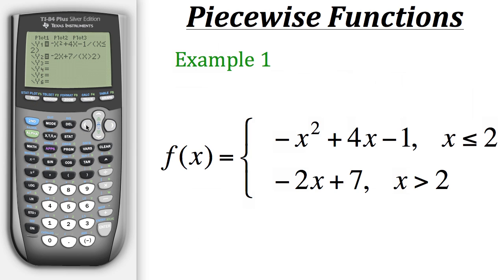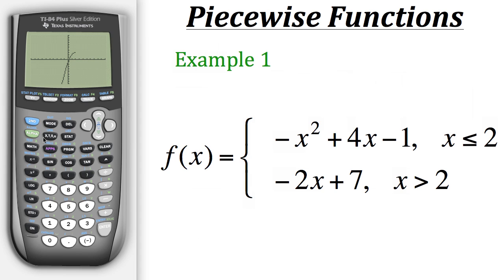For example, if we don't want to see the second part of the piecewise function, we'll just hit enter on its equals sign so that it doesn't have a black box anymore. So when we graph, we'll only see the first part of the piecewise function. And again, it'll stop at x equals 2, because it won't go any further than that — because that's the condition we gave it.